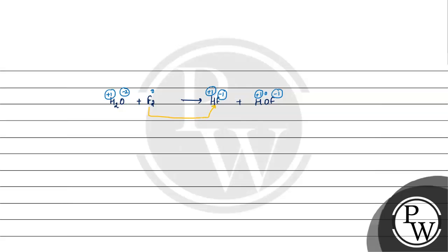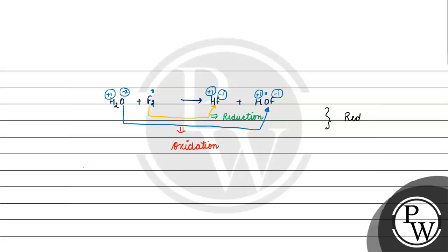What is happening: fluorine goes from 0 to minus 1. If we talk about oxygen, the oxidation state goes from minus 2 to 0. An oxidation state change from minus 2 to 0 means oxidation is happening. When the oxidation state increases, the process is oxidation. And from 0 to minus 1, the process is reduction. Decrease in oxidation state is reduction; increase in oxidation state is oxidation. So the overall reaction is a redox reaction, where both reduction and oxidation occur.